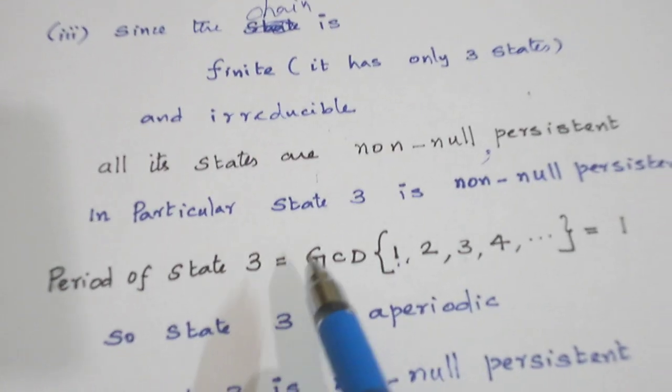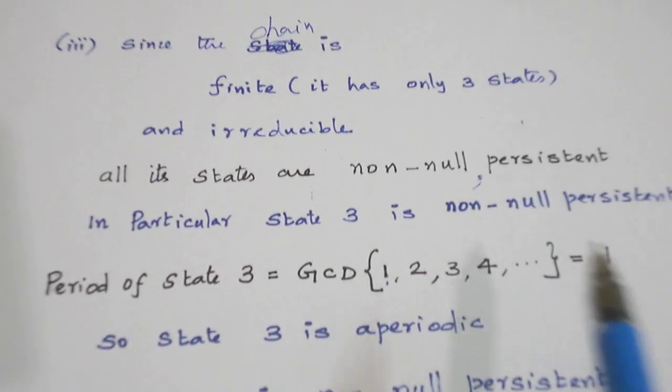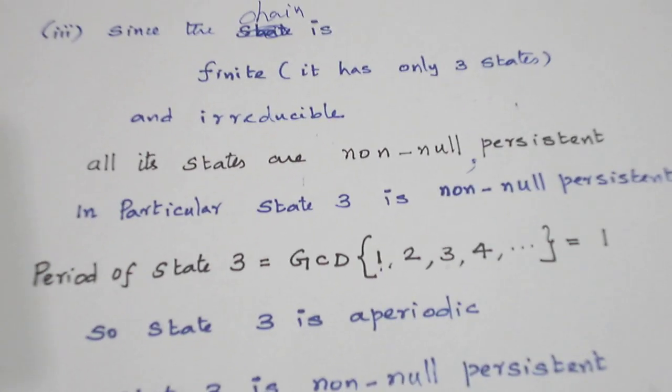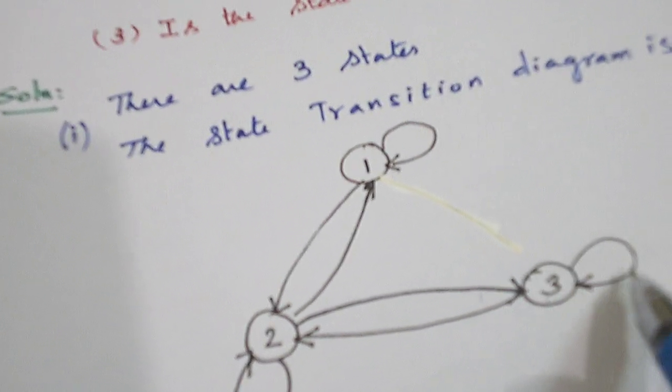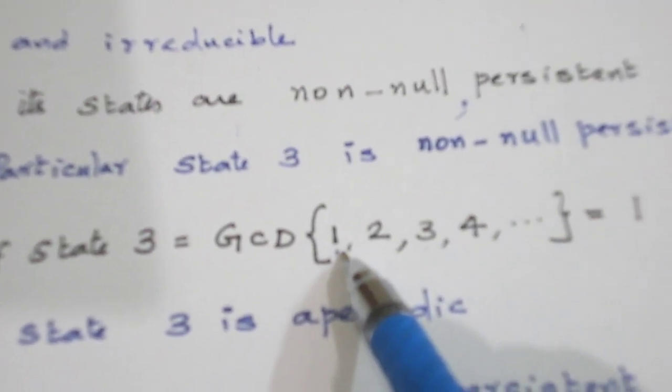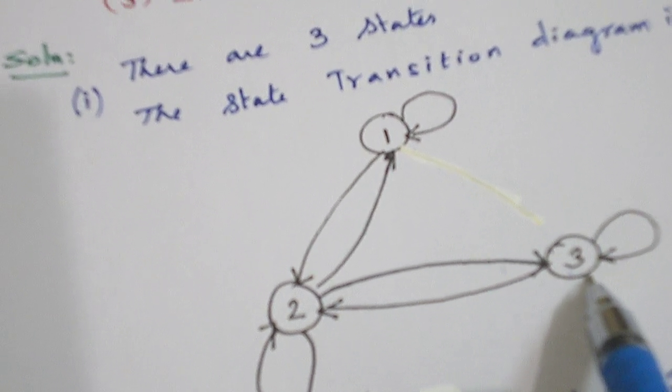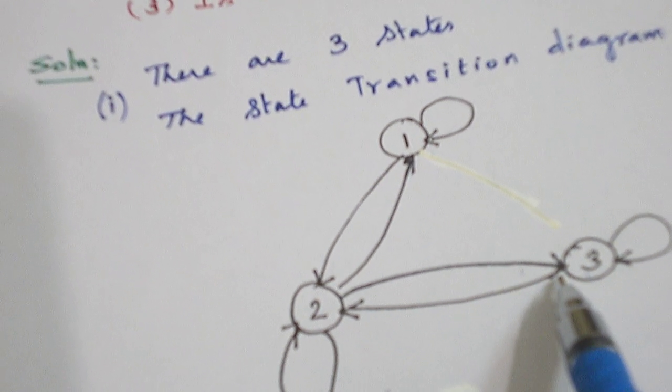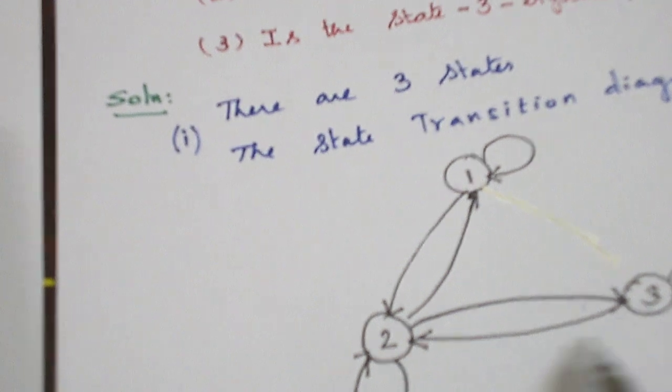Let us calculate the period of state 3. In how many steps we can return back again to state 3 from state 3. State 3 to 3 we can return back in one step. That is given in the loop. So I have written in one step it can be returned back again to state 3. State 3 to 3 we can return back in two steps. State 3 to 2, 2 to 3. In two steps we can return back.